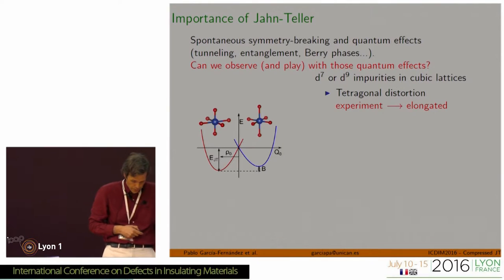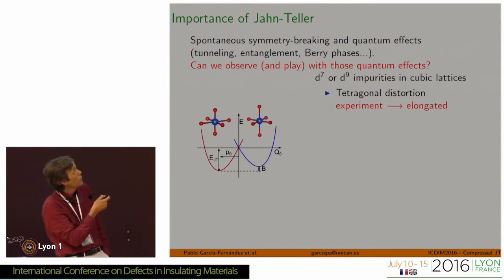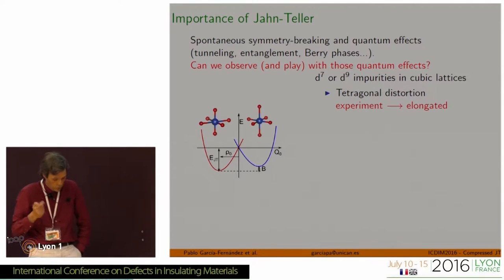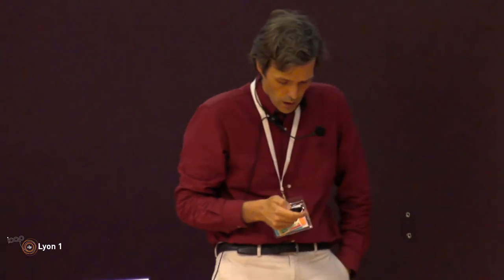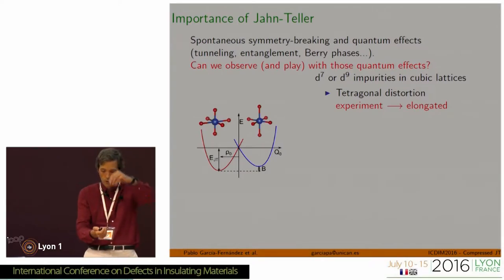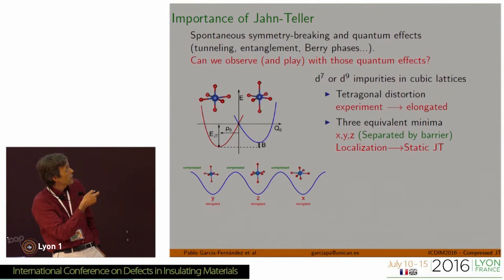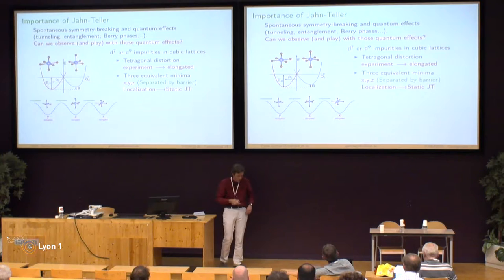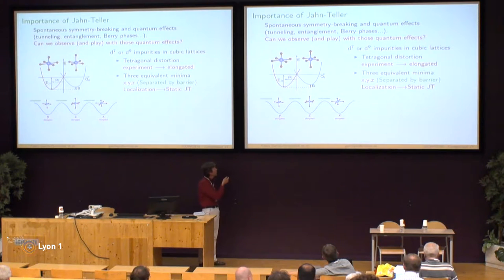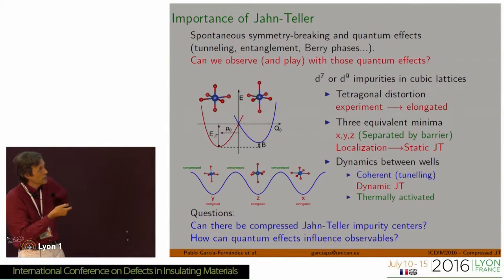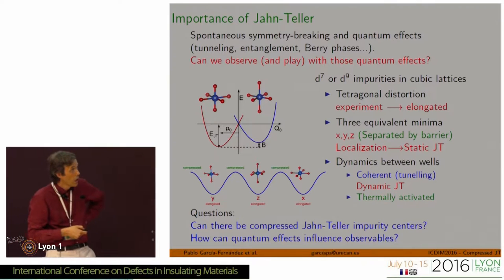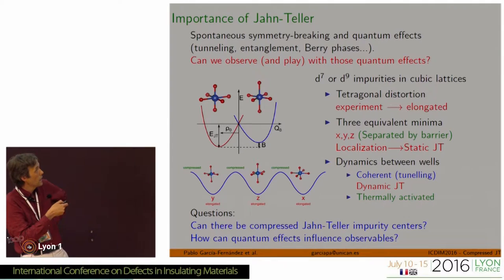Another question we have is that when you look at experimental data, and you look at D7 or D9 impurities in cubic lattices, what you find is that even though theoretically both possibilities would be available, all reports indicate that elongation is always the final geometry. The elongation can happen along three different directions in a cubic lattice, X, Y, and Z. When you observe elongation, it means the system is localized on one of these wells — we call that the static Jahn-Teller — but the system can also move around, and if the dynamics is associated to coherent tunneling, we call that the dynamic Jahn-Teller. There can also be thermally activated processes.